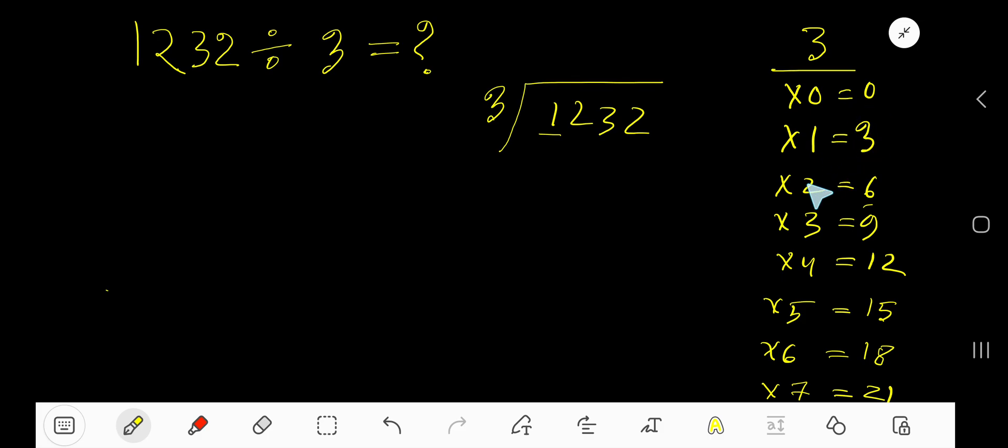3 times 0 is 0. 3 times 1 is 3. 3 times 2 is 6. 3 times 3 is 9. To find out the multiplication table of 3, just add 3 to the previous step. 0 plus 3 is 3. 3 plus 3 is 6. 6 plus 3 is 9. 9 plus 3 is 12. 12 plus 3 is 15. 15 plus 3 is 18.